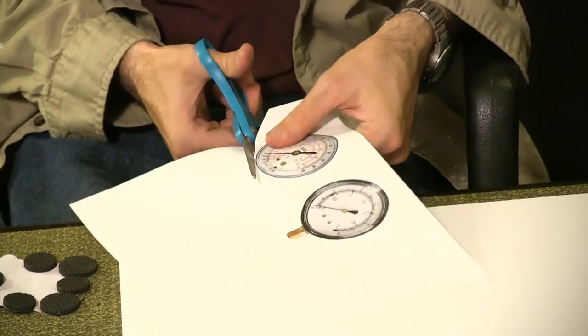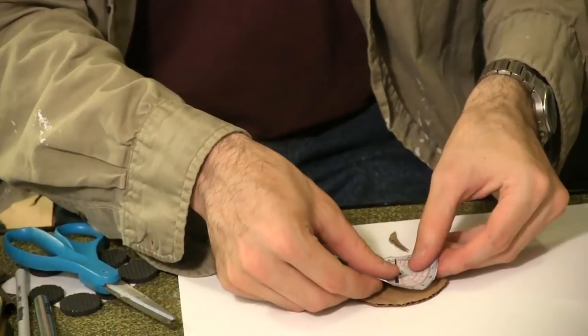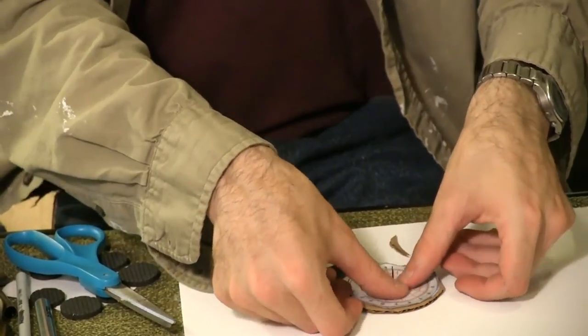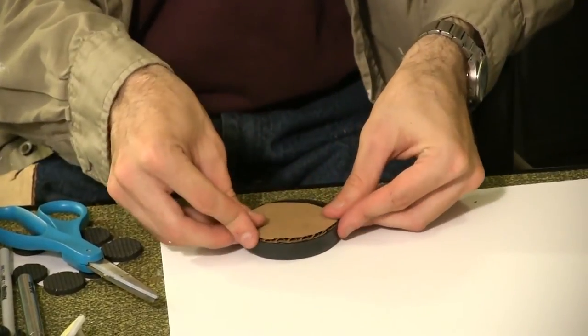Next, I found pictures of gauges on the web, sized them in a photo editor, and glued them to a cardboard circle. The cardboard circle should be just small enough to wedge into the flashlight rim without pressing against the clear plastic piece.